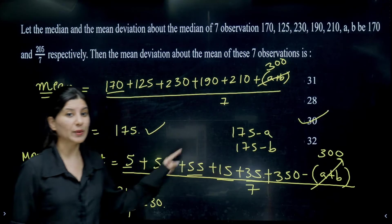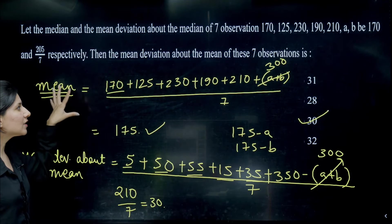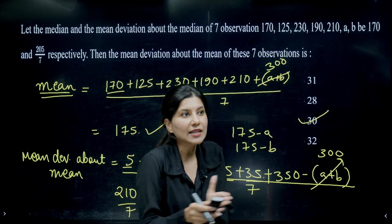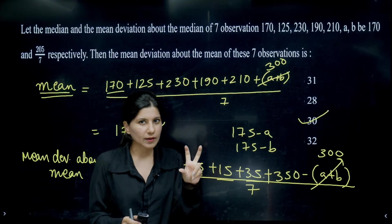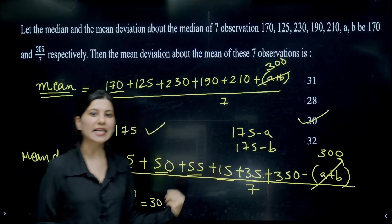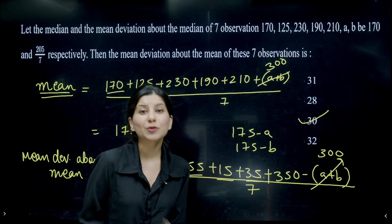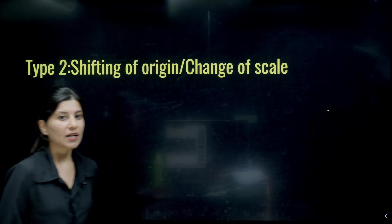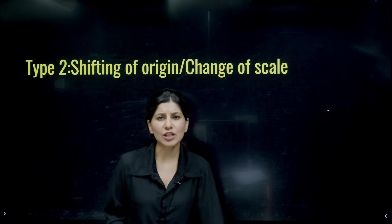The answer is 30. This was the question from JEE Mains 2024, January attempt. This was the first type, wherein two observations are missing. Sometimes we can calculate individual observations, and sometimes we can only find the sum or an equation involving A and B. This type appears in 2023, 2022, 2021, and so on.